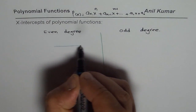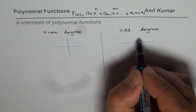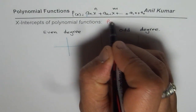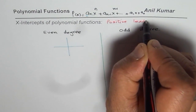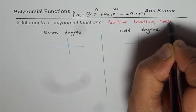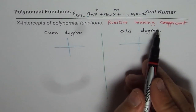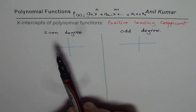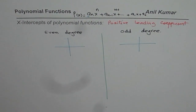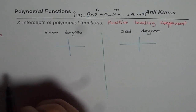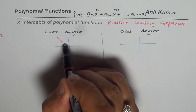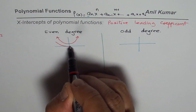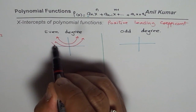If we have an even degree polynomial, let us assume the leading coefficient is positive. For a negative leading coefficient the end behavior will simply be reversed. If we consider degree 2, a quadratic function, the parabola could go upward with no x-intercepts, it could touch at one point, or it could cross and give two x-intercepts.